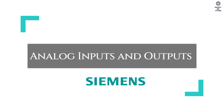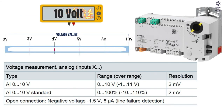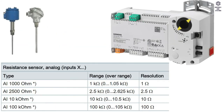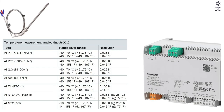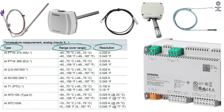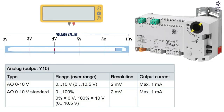Analog inputs and outputs: the analog input voltage measurement, resistance sensor measurement, and temperature measurement type, range, and resolution are shown in the table. The analog output voltage measurement type, range, resolution, and output current are also shown in the table.